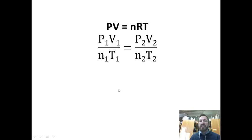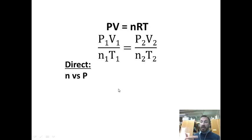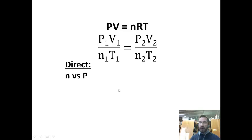What things would have a direct relationship? N versus P would. These are the two things that change — you're changing number of moles and pressure, but holding constant volume in a rigid container and holding constant temperature, so molecules are not moving any faster. But if you keep adding more molecules, the pressure goes up. An example of this is a bicycle pump: add more gas molecules, the pressure goes up.